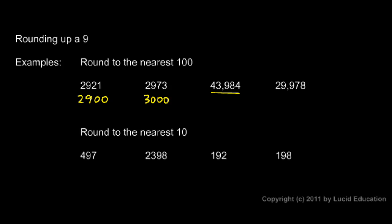Here is 43,984. We're told to round this to the nearest hundred, so we find the hundreds place. That's the 9 right there. The next place is an 8. We look at that to see which way we round.